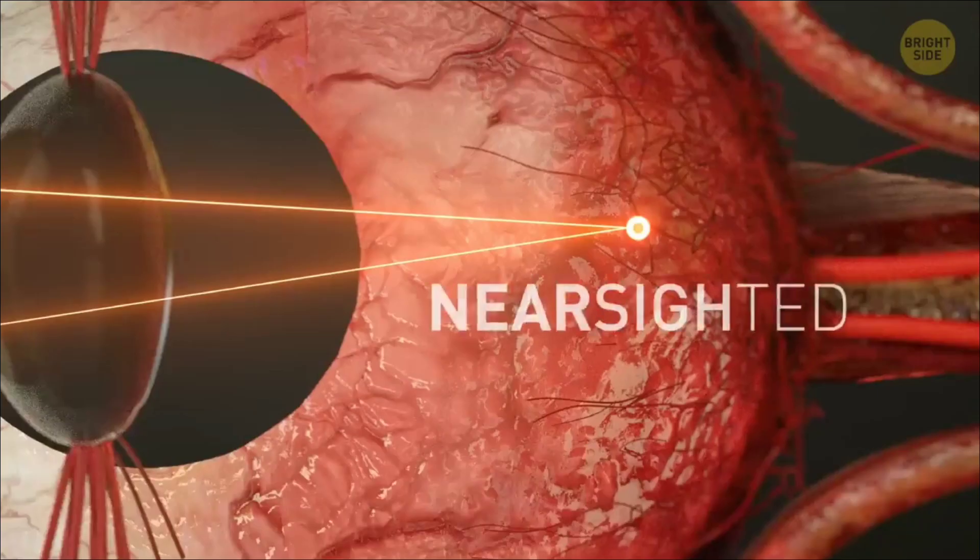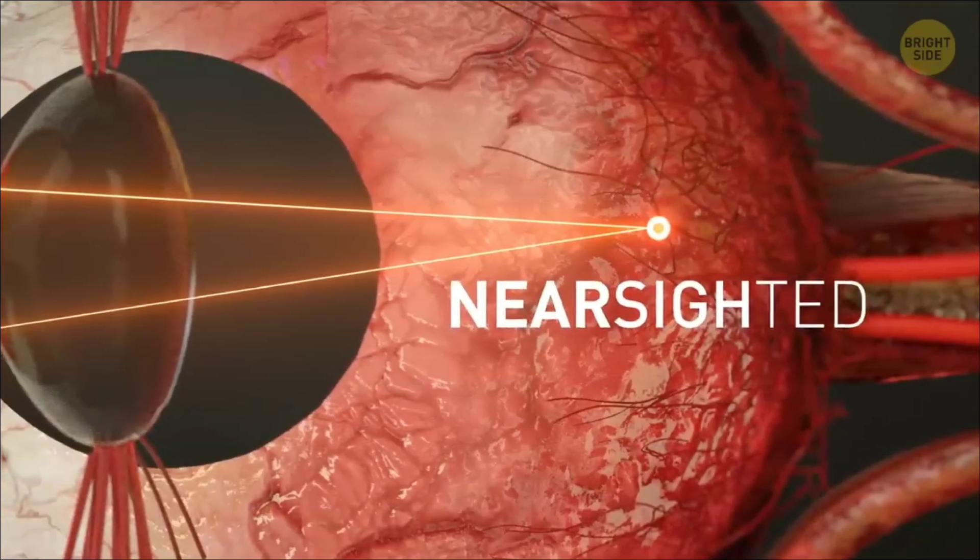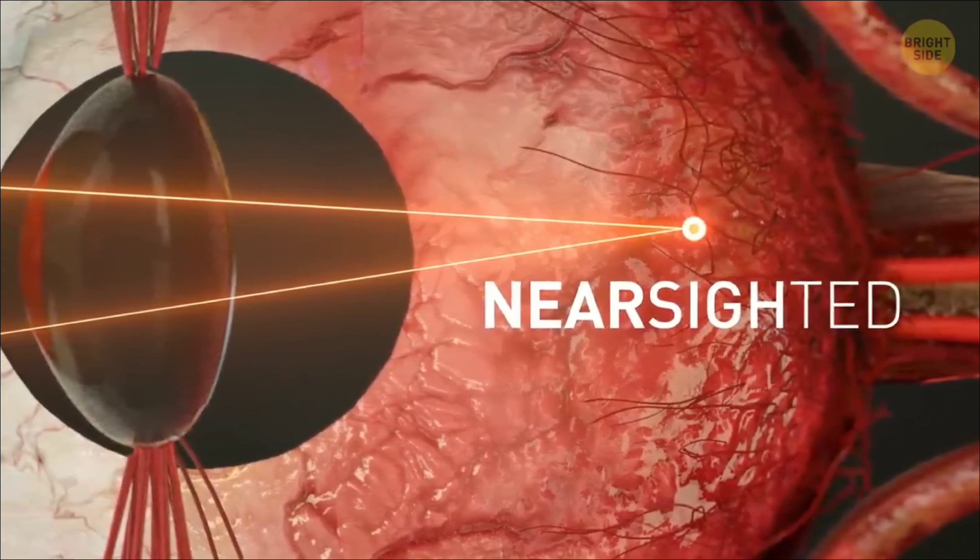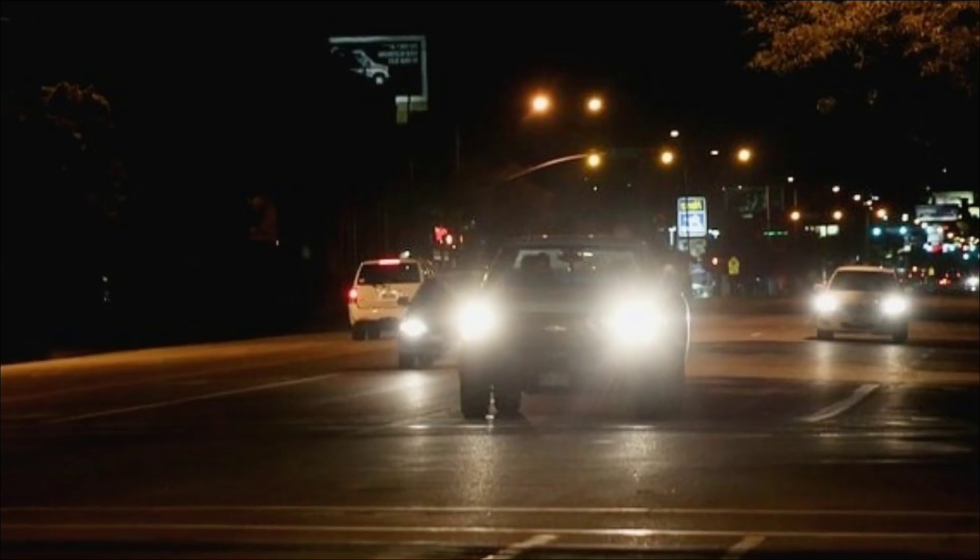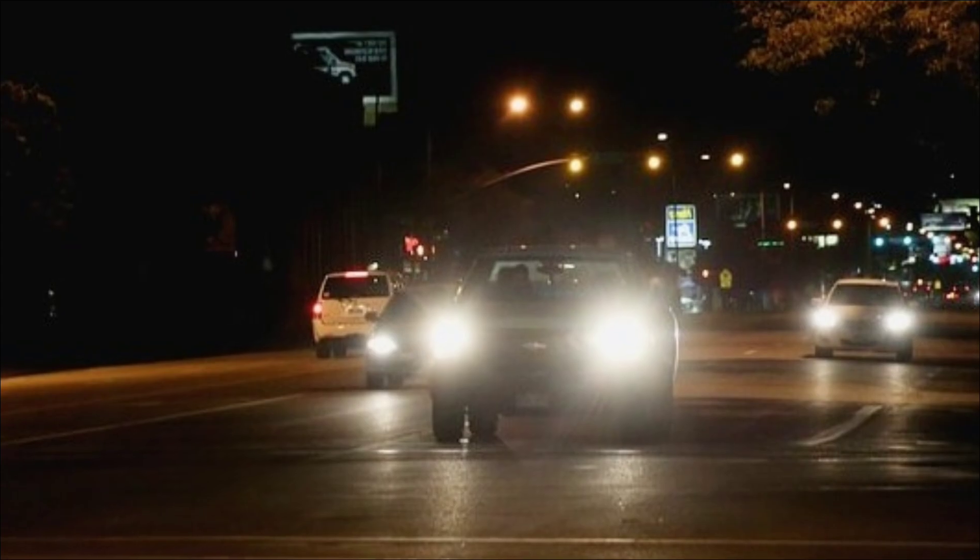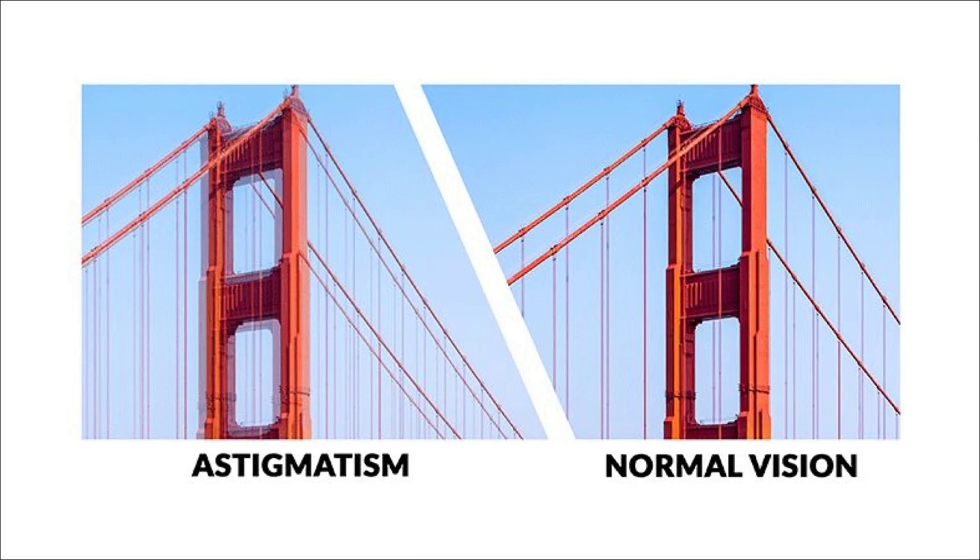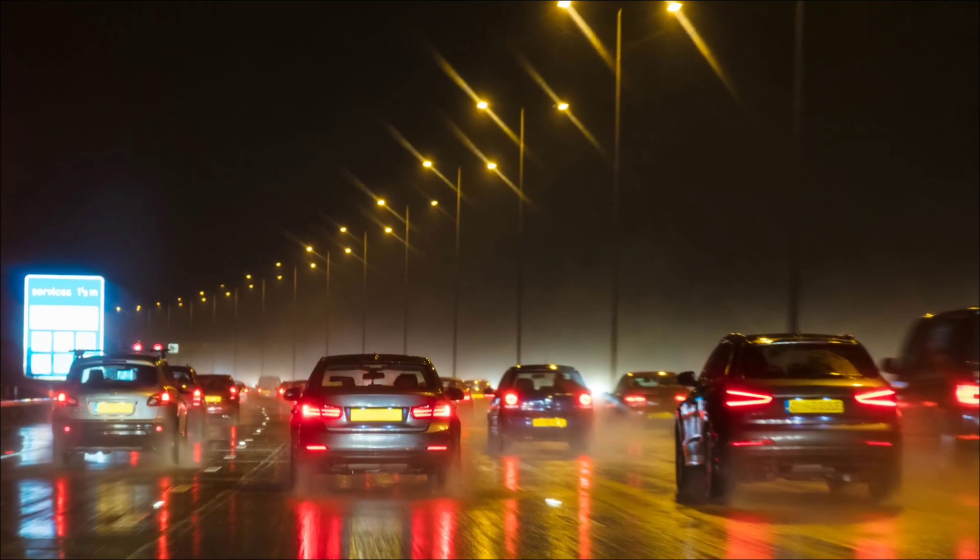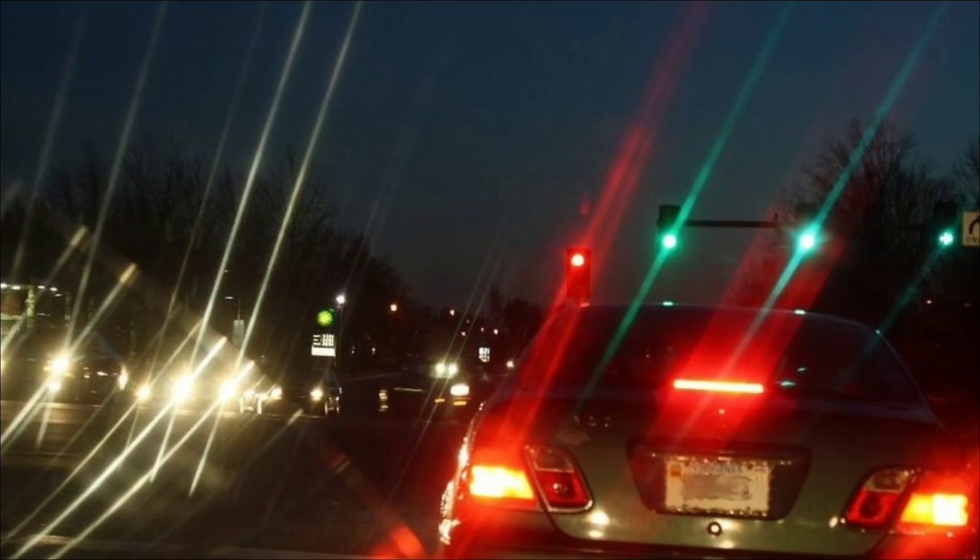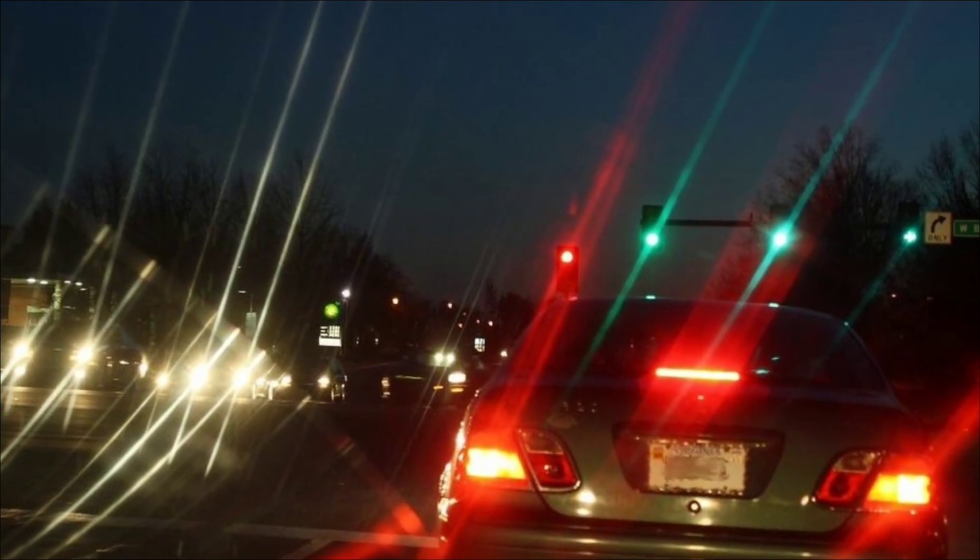If you were just nearsighted, so being nearsighted but not having the asymmetric effects of astigmatism, that blur would happen equally in all directions. So still messing with your vision. But if you have astigmatism, that blur is mainly in one direction. And that's why you see points of light at night spread out into lines.